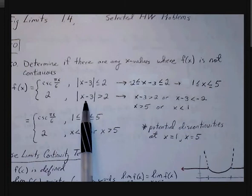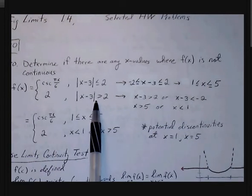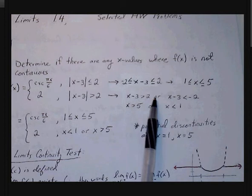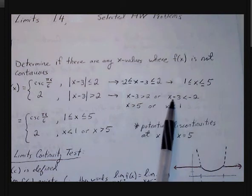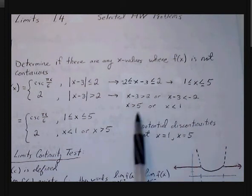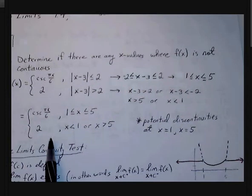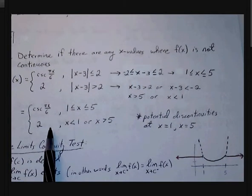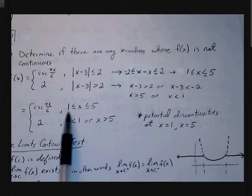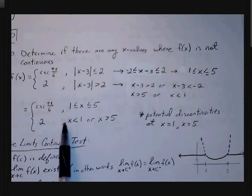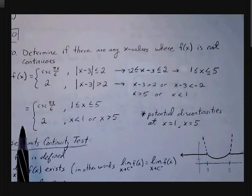If the absolute value of x minus 3 is greater than 2, we can think of this as x minus 3 is greater than 2, or x minus 3 is less than negative 2. If we rewrite this, x is greater than 5 or x is less than 1. So we have our intervals rewritten in a form that is easier to read.